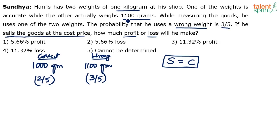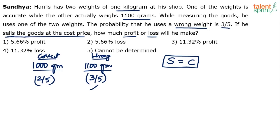He is supposed to give 1000 grams only. But he may give 1000 grams or he may give 1100 grams. And there is a higher probability — 60% chance — that he gives 1100 grams, which means he ends up giving more quantity than required in most cases. So while he makes no profit or loss in terms of selling price versus cost price, in terms of quantity he ends up losing. That's why the answer will be a loss. Profit options and 'cannot be determined' are eliminated.